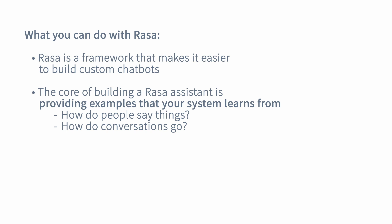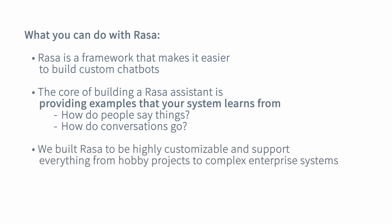Raza is a framework that makes it easier for you to build custom chatbots using a combination of machine learning approaches and heuristics or rules. The real core work of building your Raza assistant is providing examples that your assistant learns from — how do people say things, what are the different ways people phrase what they want to say, and what conversation patterns do you want your assistant to handle? Raza was built to be super customizable, flexible, and extensible to support a wide variety of projects. The downside is it does take a little more time to get started, but once you put in the time to set up, you should be good to go.